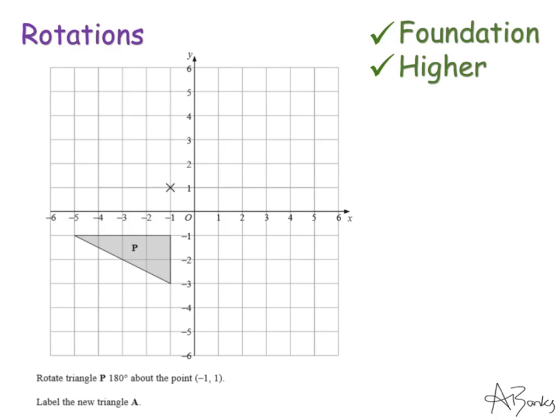Let's look at another example. This time I have a triangle and they want me to rotate it 180 degrees about the point (-1, 1). In this example they've plotted that coordinate on for me with this cross here. That's (-1, 1). So I'm going to go through the same process again. I'm going to cover it with tracing paper.